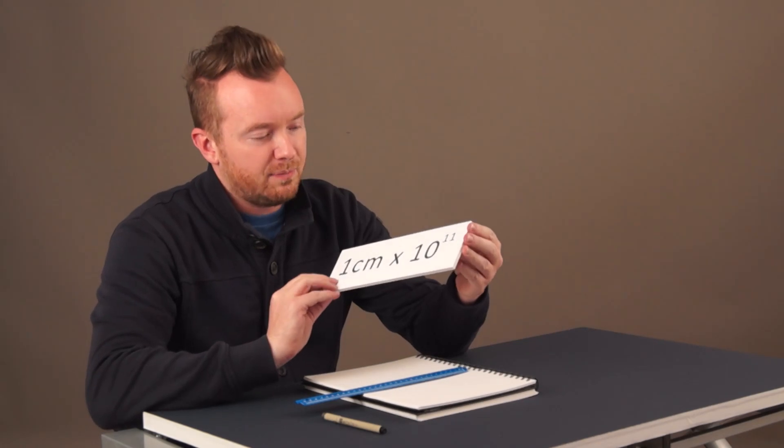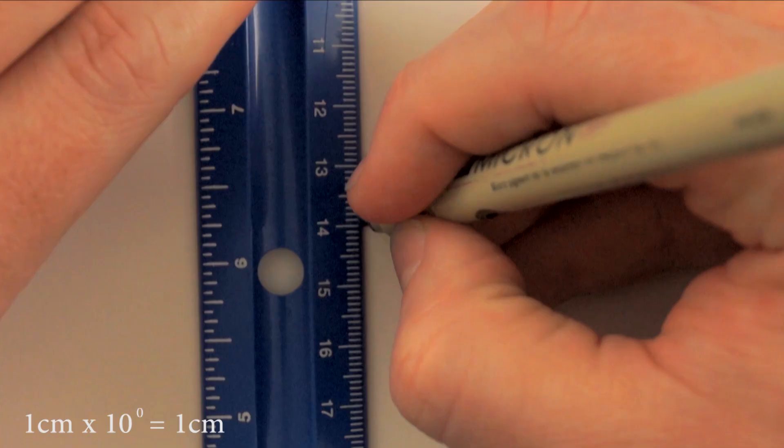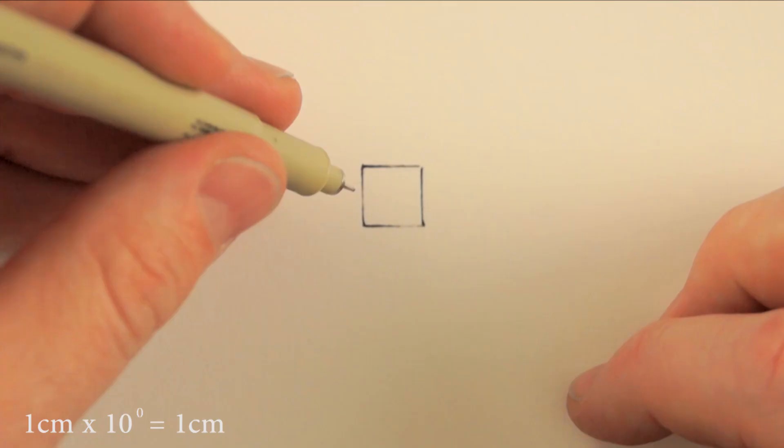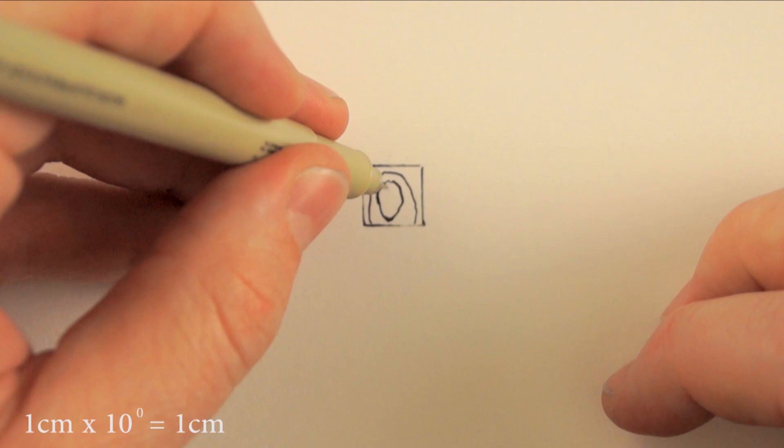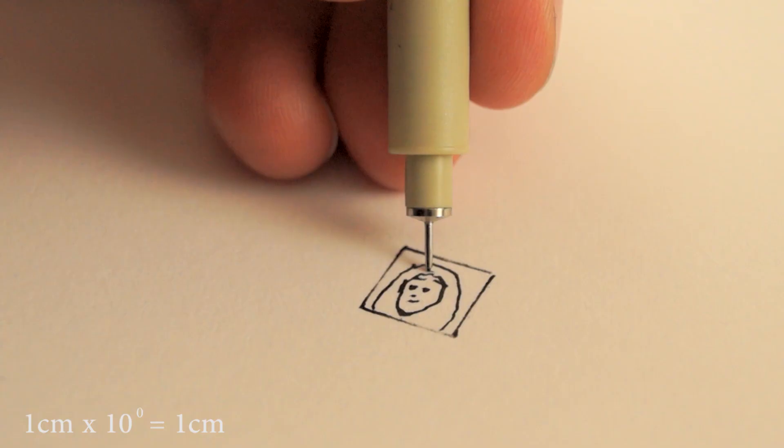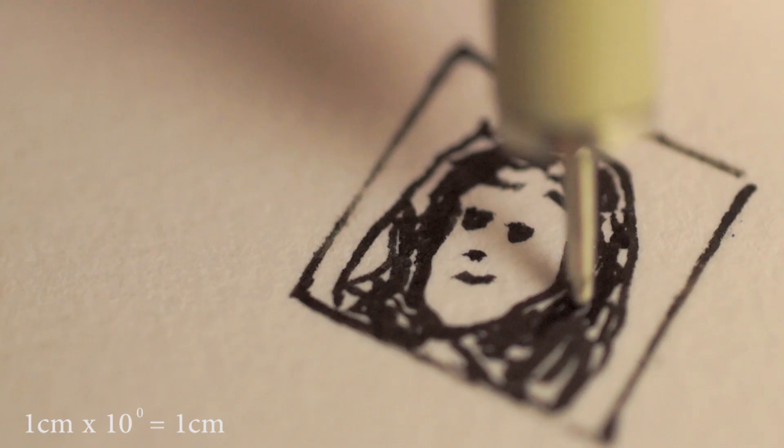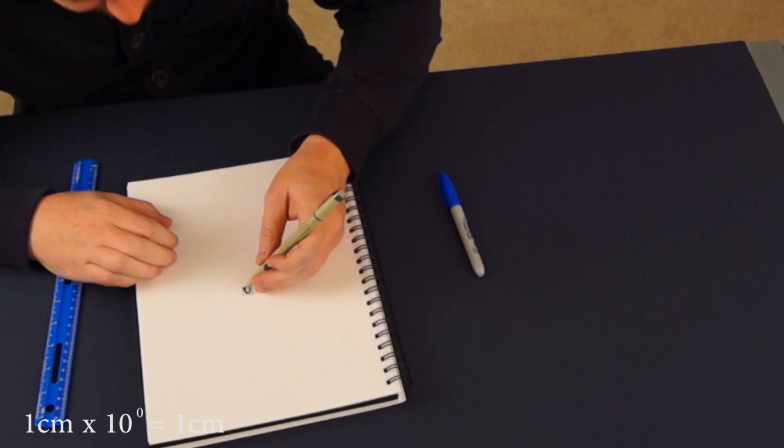How can we get a perspective on just how powerful this little number is? Well here's one way to do it. Starting right now, I'm going to draw a 1 centimeter image and then every 10 seconds I will take it to the next power, or 10 times larger. I wonder how big 1 centimeter times 10 to the 11th is gonna be? That image is tiny.